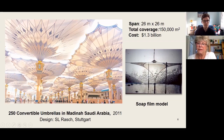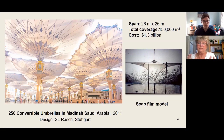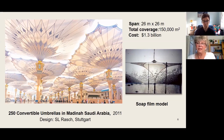These umbrellas are huge — they have a span of 26 by 26 meters, decorated with gold and no doubt precious stones as well. They cost well over a billion dollars. You can see here experiments with soap film models to get the shape of these umbrellas.